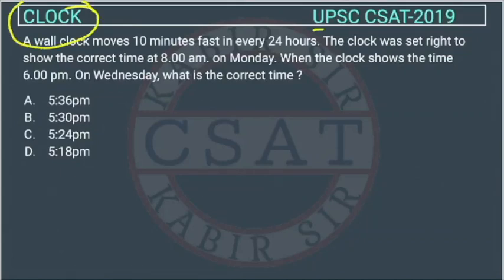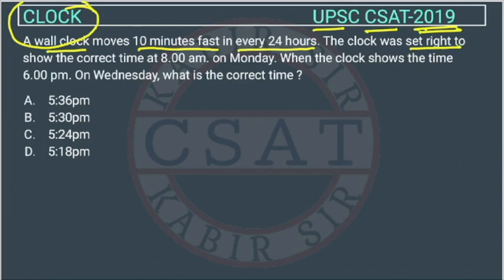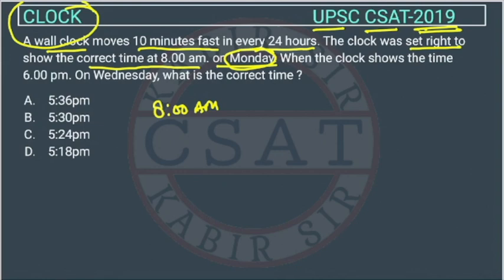This is a question from the clock chapter asked by UPSC in CSAT paper of 2019. A wall clock moves 10 minutes fast every 24 hours. The clock was set right to show the correct time at 8 am on Monday. When the clock shows the time 6 pm on Wednesday, what is the correct time?